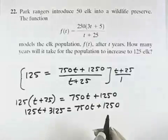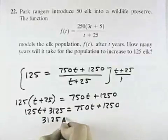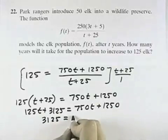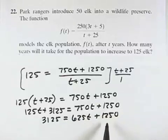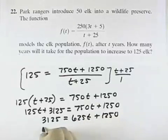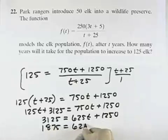If I subtract 125t from both sides I'll have 3125 equals 625t plus 1250. If I subtract 1250 from both sides I'll have 1875 equals 625t.